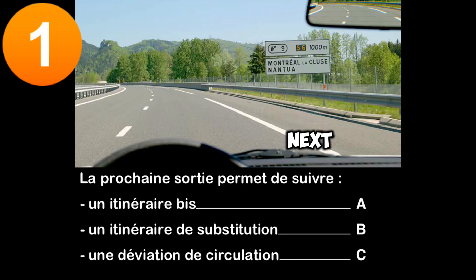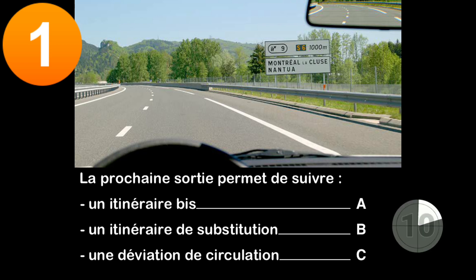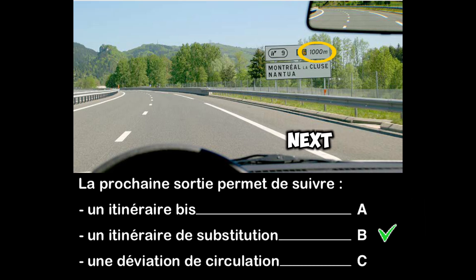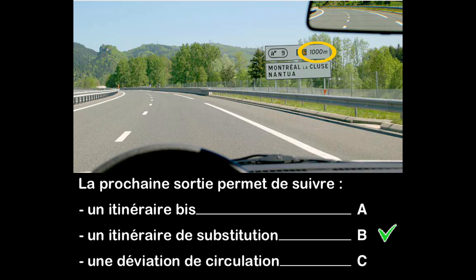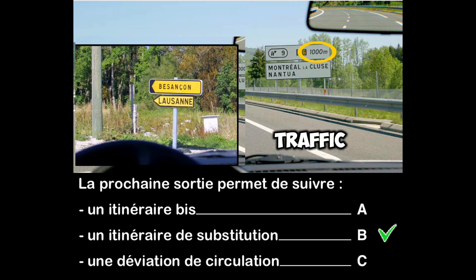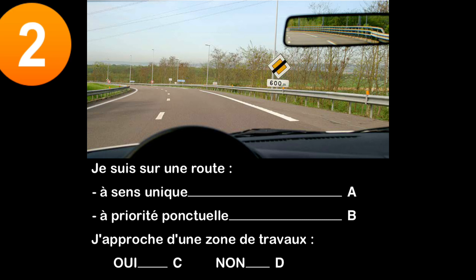Question one: the next exit allows you to follow — a) a substitute route, b) a traffic deviation, c) an alternative route. This sign announces the next exit at 1000 meters. The insert specifies that by taking this exit I will be able to follow alternative route AS6, which is used to replace the main motorway route in the event of disruptions. Different signage is provided to mark a route or a traffic deviation.